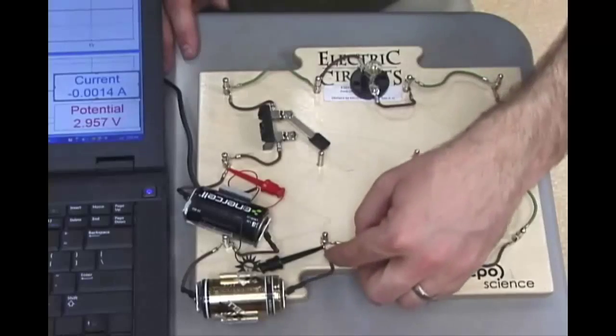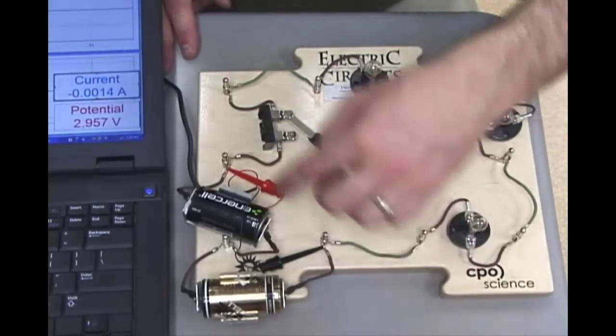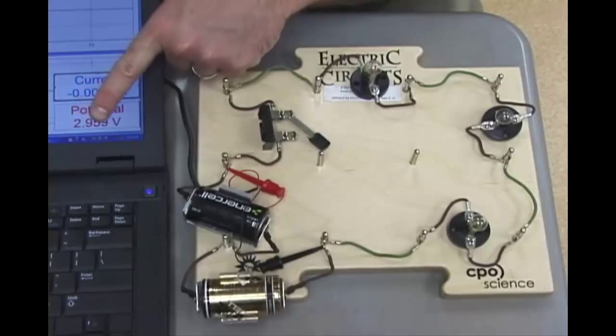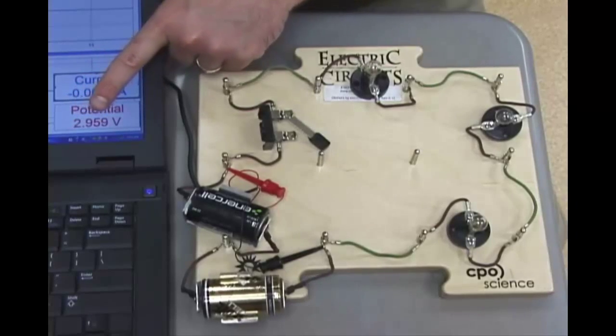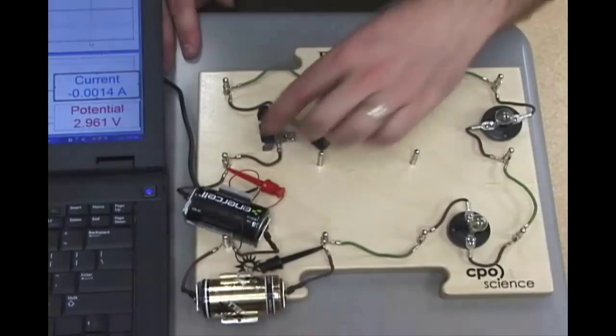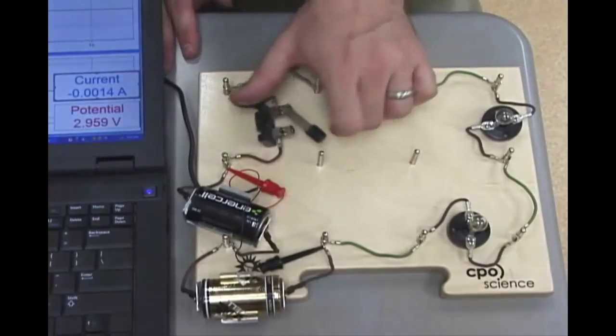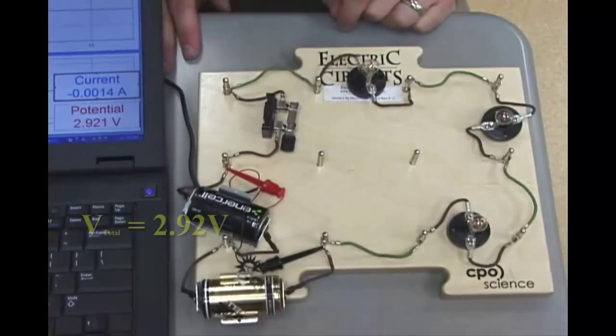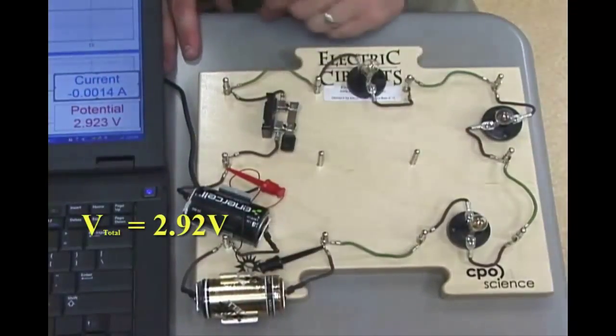Okay, I've clipped my voltmeter onto this post and to this post and I see that my total voltage is 2.96, let's say. But I haven't even closed the circuit yet. You know what? It really doesn't matter. 2.92. So, that is the total voltage.